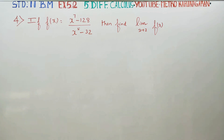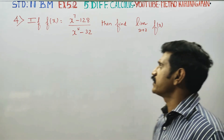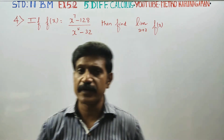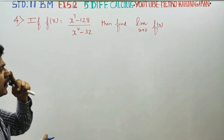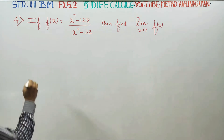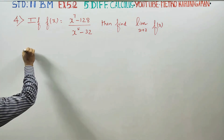Dear Leevan Standard Business Maths students, I am Metro Karanagaran. If f(x) is equal to x power 7 minus 128, divided by x power 5 minus 32, find the limit of x tends to 2 of f(x).